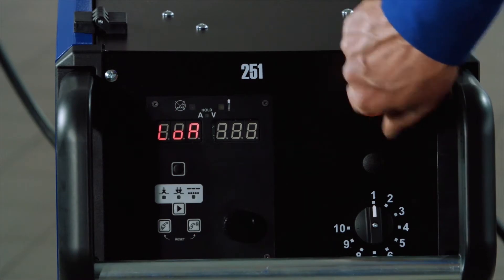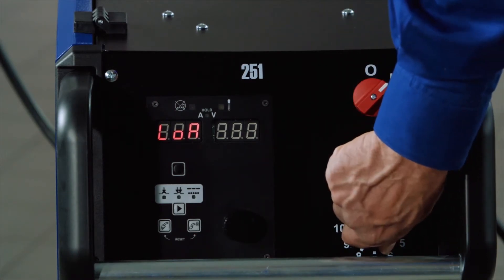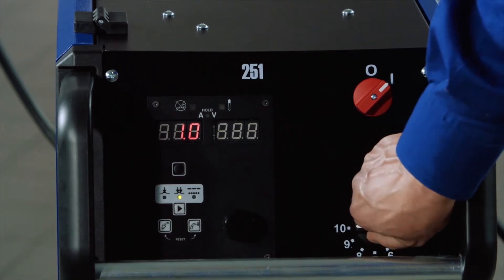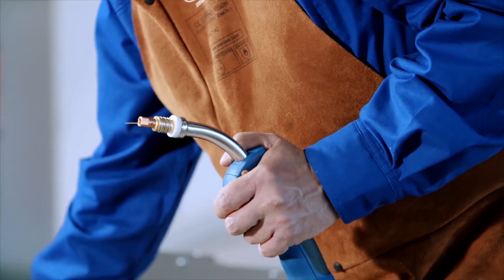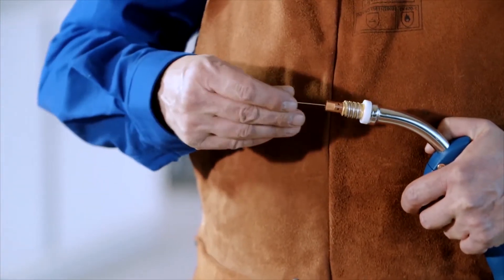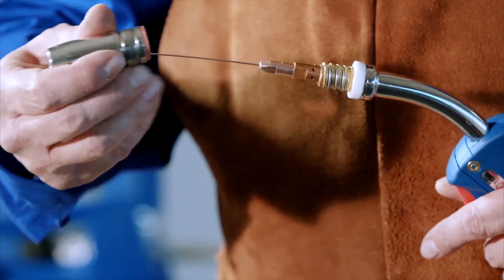Now turn on the device and turn the main weld machine switch to 10. At the touch of a button, the wire is fed through the hose to the front of the torch. When the wire is visible, attach the contact tube and then the gas nozzle.